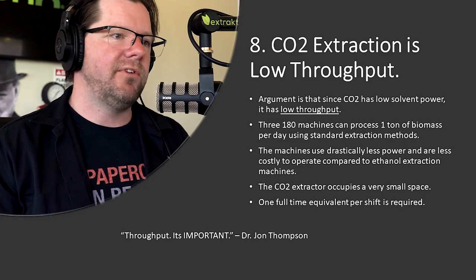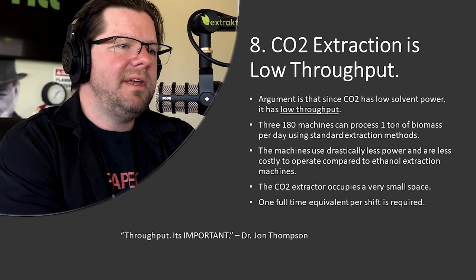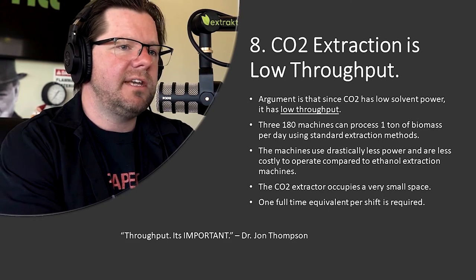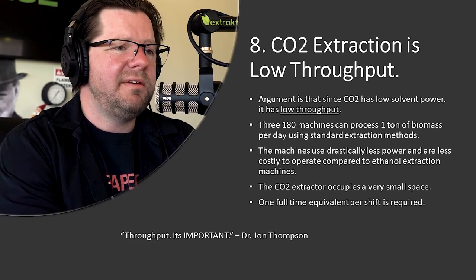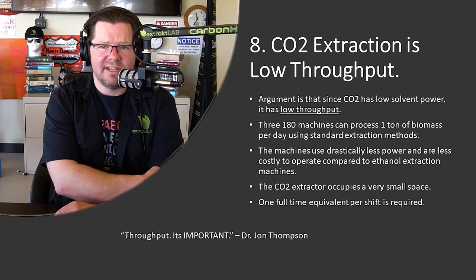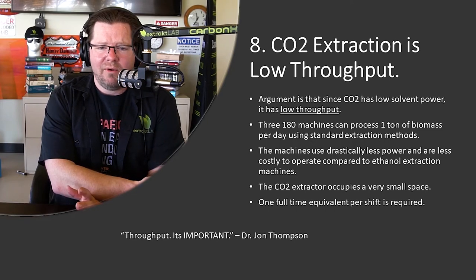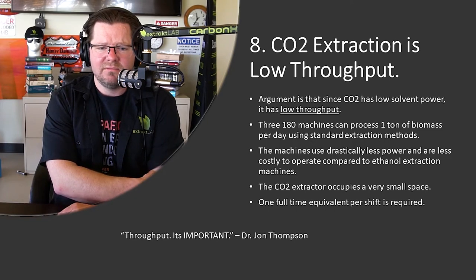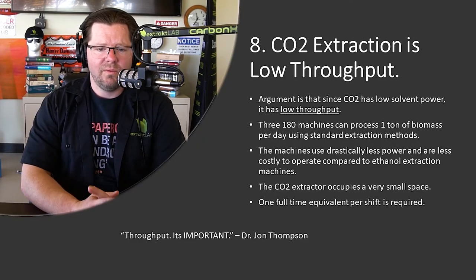Number 8: CO2 extraction is low throughput. Again, this argument goes back to low solvent power and long run times. We just don't see this borne out in real life. Three of our 180 machines can process one ton of biomass per day in a very small space — about 26 square feet per machine, roughly 75 square feet total, and around 240 amps three-phase. Very low power, low space, and inexpensive to run. CO2 is basically four cents a pound.